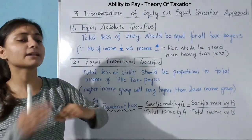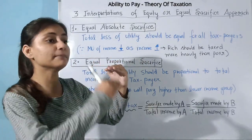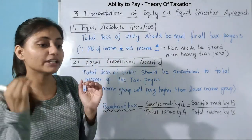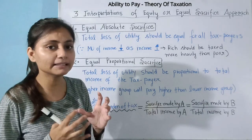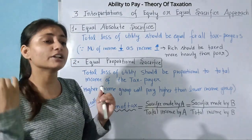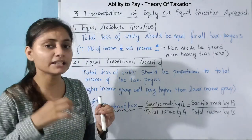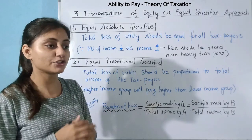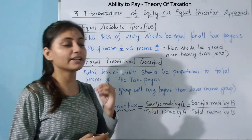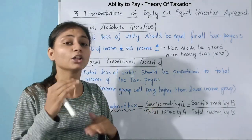For example, if you were a poor person and your salary was 10,000–20,000, you would get a lot of utility from each rupee. But as income rises, the marginal utility from each additional rupee decreases progressively.